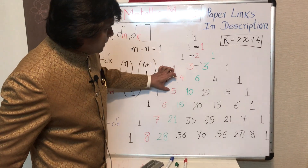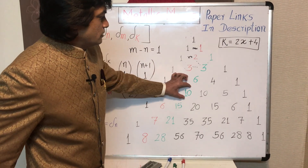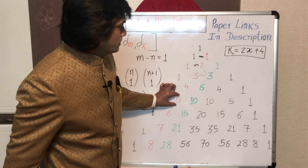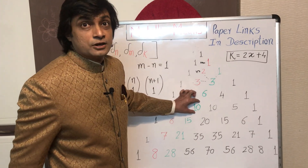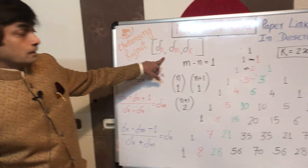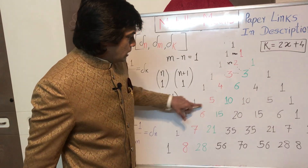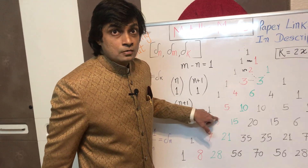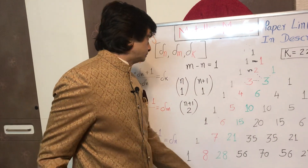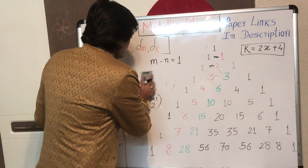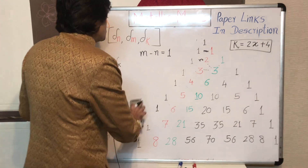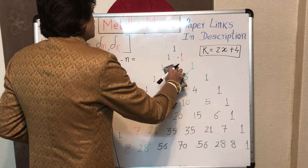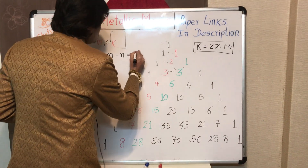Suppose N equals 4 and M equals 5, then K will equal 24. The fourth metallic ratio, fifth metallic ratio, and twenty-fourth metallic ratio will form a triad. Similarly, the fifth and sixth metallic ratios and the thirty-fourth metallic ratio will form a triad. Now suppose M and N are not consecutive integers — say M minus N equals 2, like N equals 2 and M equals 4.